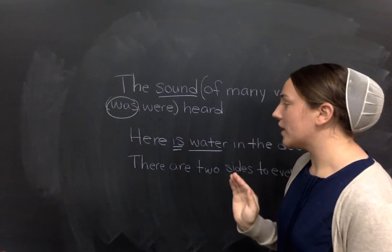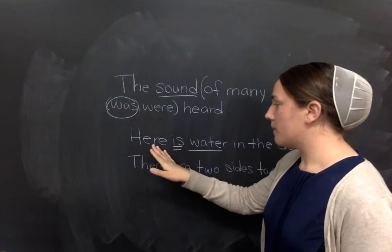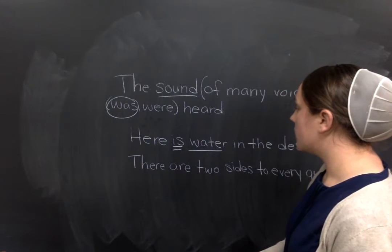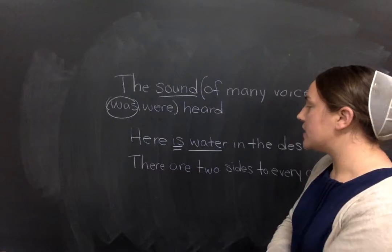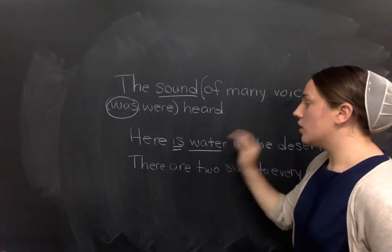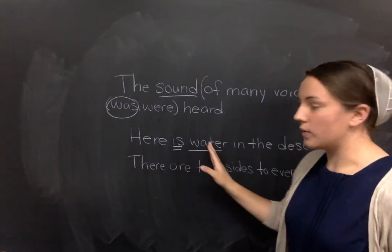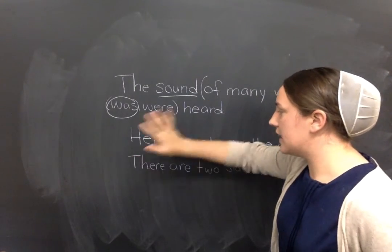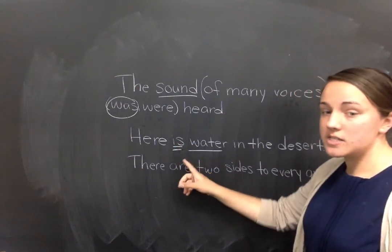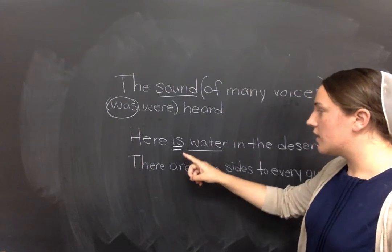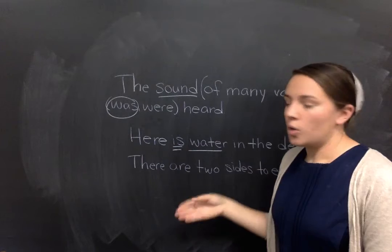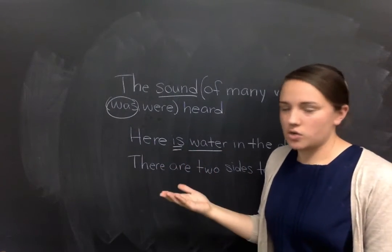Now, when you have here at the beginning of your sentence, remember that, again, your verb needs to agree with your subject. Don't worry about here. Don't try to think of here is or here are to figure out what your verb should be. Think of water is or water are and which is correct. Water is is correct. Okay.